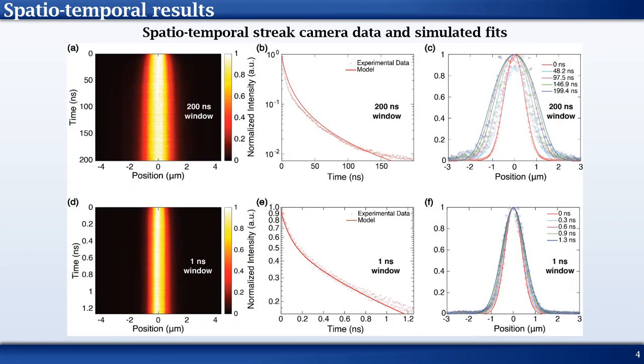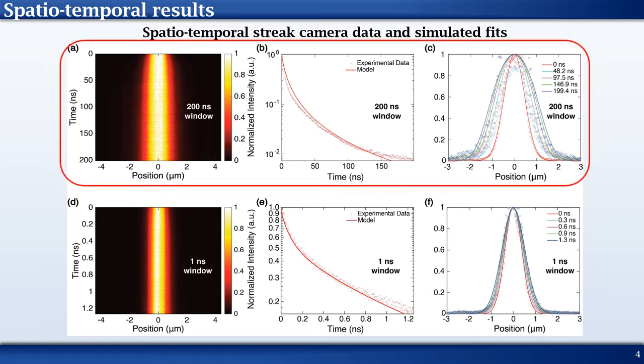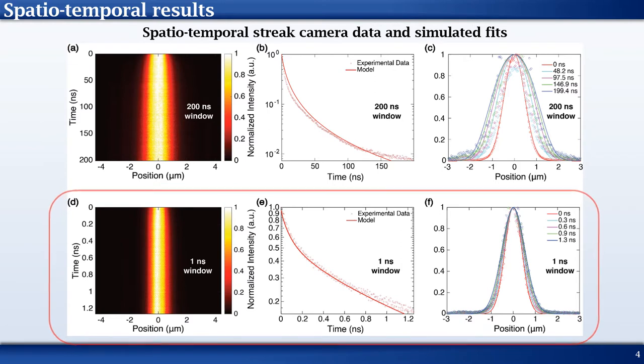Before looking at photon recycling, we first use a streak camera on our samples to extract diffusion and recombination coefficients. This can be done using the experimental setup in the first configuration which allows extraction of the spatiotemporal distribution within the perovskite thin film. In this figure, we show the results for measurements performed in two different time windows, which are 200 nanoseconds and 1 nanosecond.